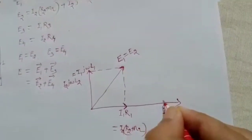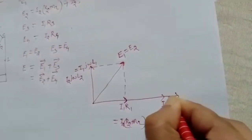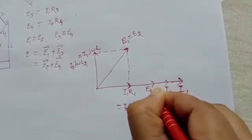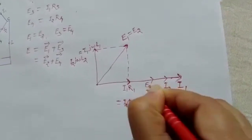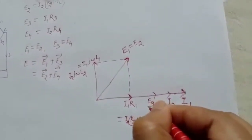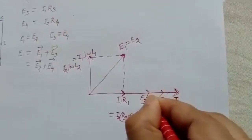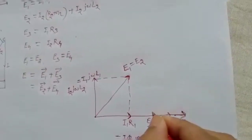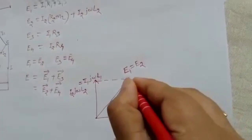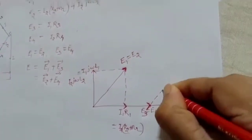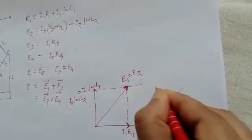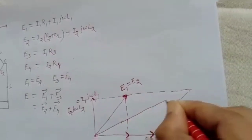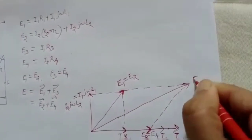E3 = I1·R3, so E3 is in phase with I1 since branch 3 is purely resistive. E3 also equals E4. Having established E1, E2, E3, and E4, the phasor sum of E1 and E3 gives the total circuit voltage E. This completes the phasor diagram of Maxwell's inductance bridge. In the next video I will cover Maxwell's inductance-capacitance bridge.